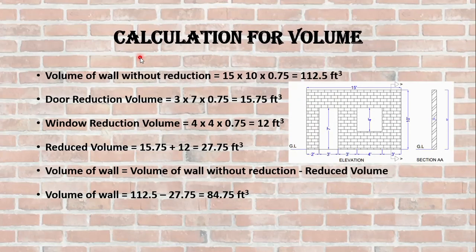For volume, we multiply the length times height times thickness of wall. It becomes 112.5 cubic feet. Now we have to reduce the volume of door and window. For that we will add these two volumes. For door it becomes 15.75 cubic feet and for window it is 12 cubic feet. We add them and then subtract from the total volume of wall. So the volume of wall would become 84.75 cubic feet. This is the volume where the bricks and mortar would be laid.